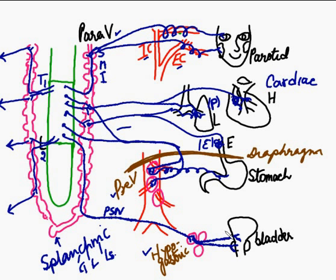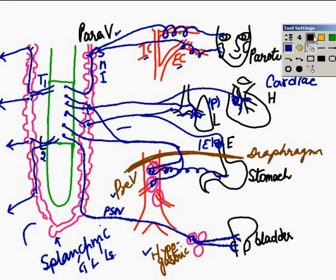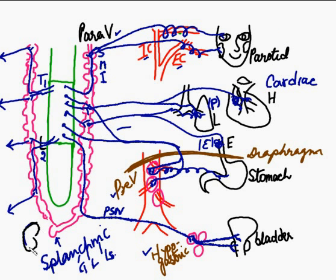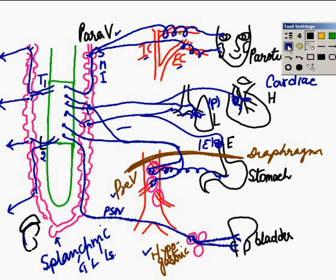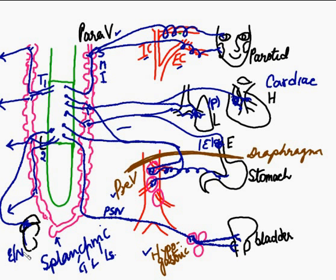The preganglionic fibers can also directly supply the adrenal gland, which sits on top of the kidney. They pass out as the same splanchnic nerves without synapsing in a ganglion, and instead come to synapse on cells in the medulla of the adrenal gland. Those cells act as postganglionic neurons and secrete epinephrine and norepinephrine — there are no postganglionic fibers as such.